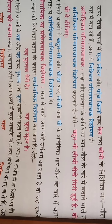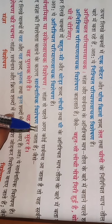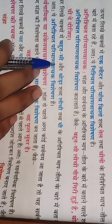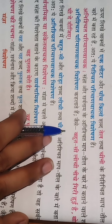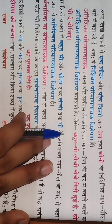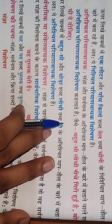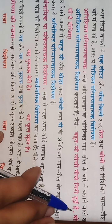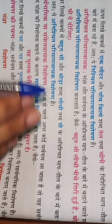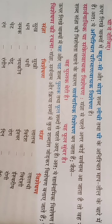Anishchit Parimaan Vachak Visheshan: sangya aur sarvnaam ke anishchit maap-tol ke baare mein batane wali shabd. For example: 'Bahut si leechi neeche giri hui hai' — how many leechiyan? Ab pata nahi kitni hain. 'Thoda ghee de dijiye' — thoda matlab kitna? Koi nishchit matra nahi batai ja rahi — yeh Anishchit Parimaan Vachak Visheshan hai.